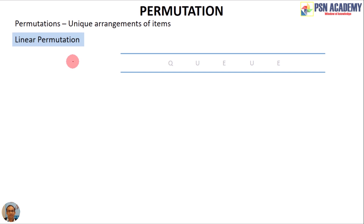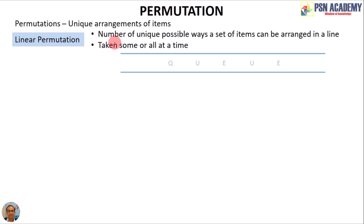For linear permutation in detail: it is the number of unique possible ways a set of items can be arranged in a line — notice the word 'unique'. You can choose some or all of those items at a time. The phrase 'at a time' causes some confusion for learners, so let's clarify it.